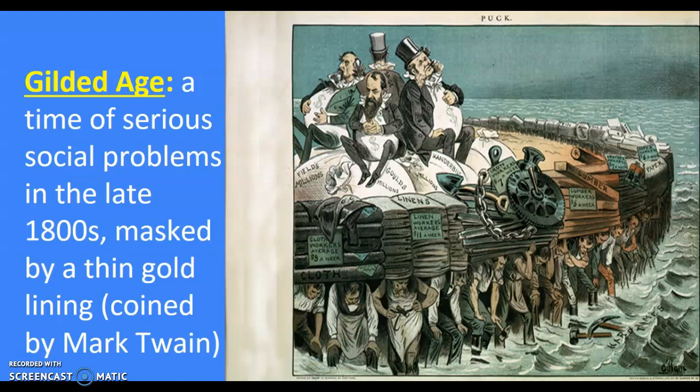The Gilded Age is a term coined by Mark Twain, defining a time of serious social problems in the late 1800s that's masked by a thin gold lining. If you see anything that's gilded, it's golden on the outside, but underneath that thin gold lining is a lot of social problems. Here you see a political cartoon showing the privileged few on the backs of the working class, and this is going to give rise to unions.